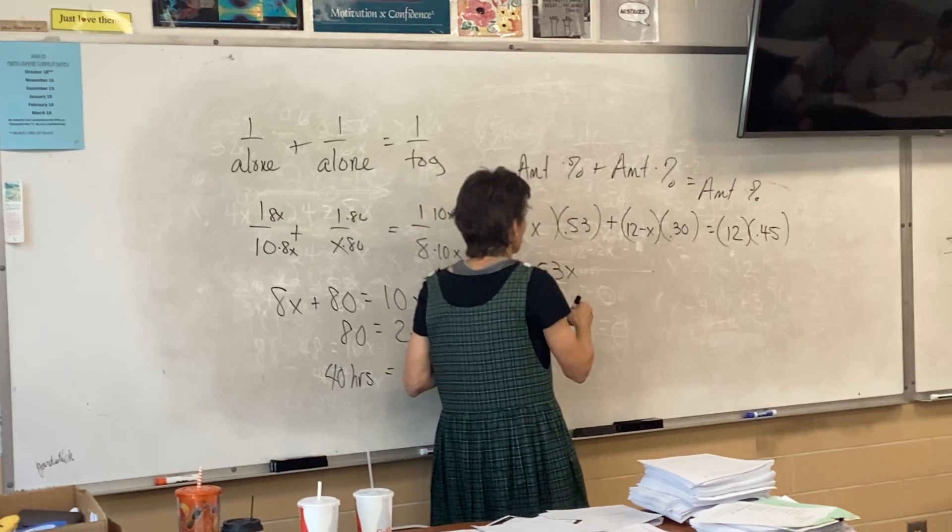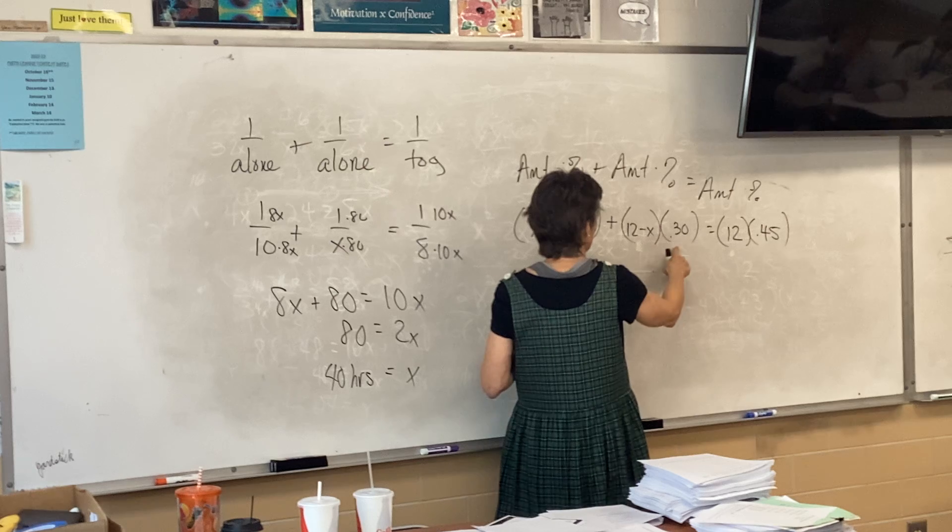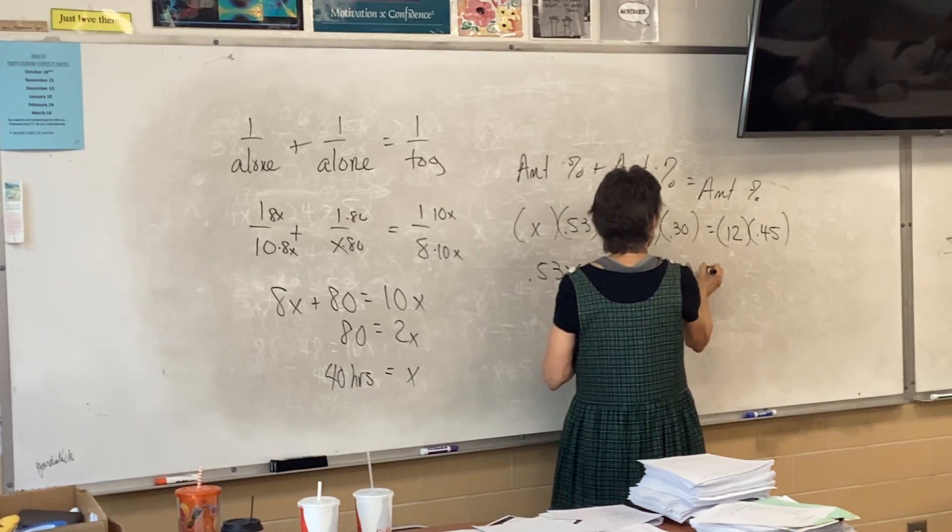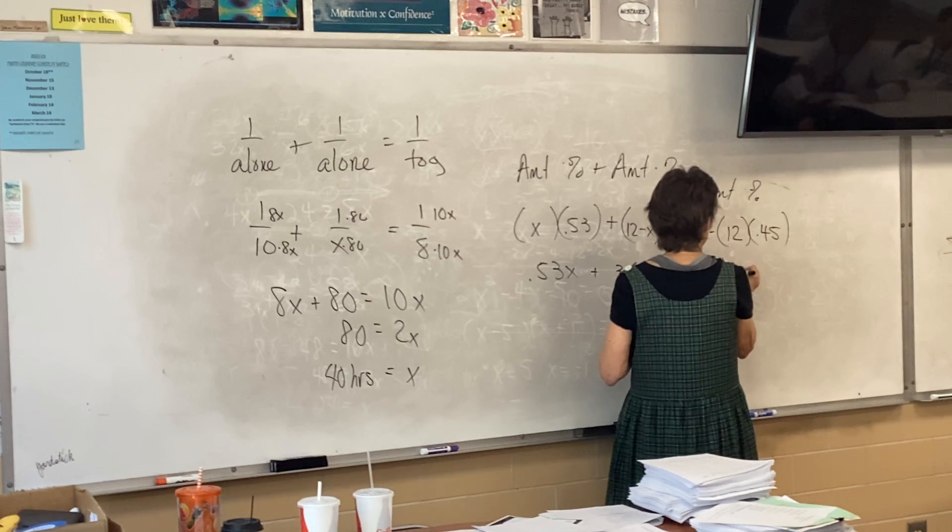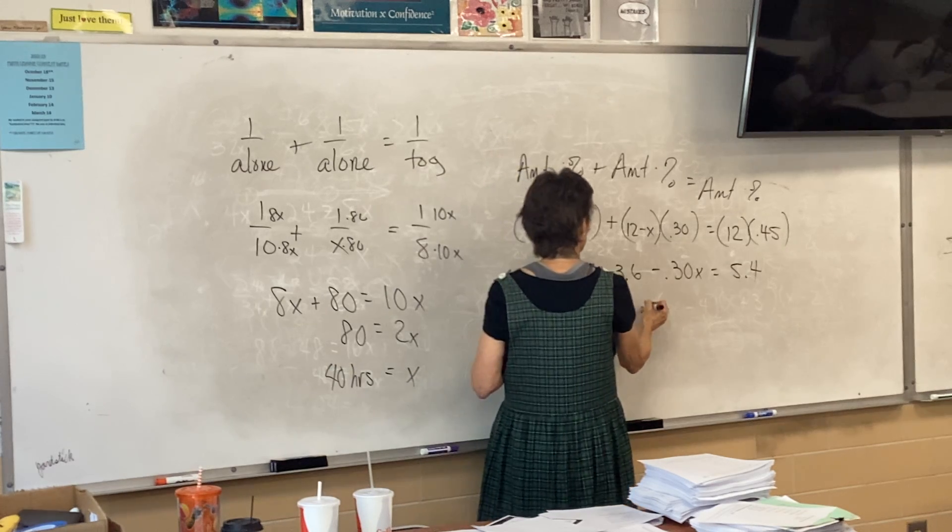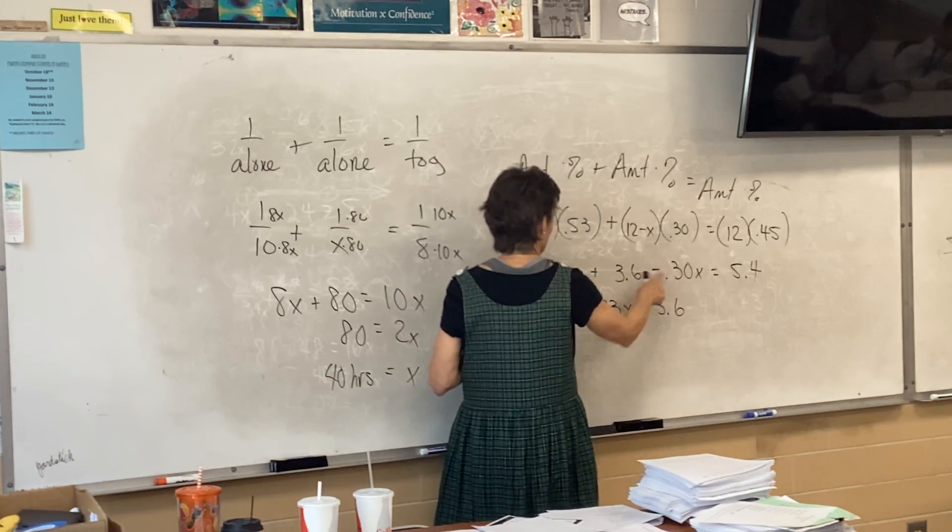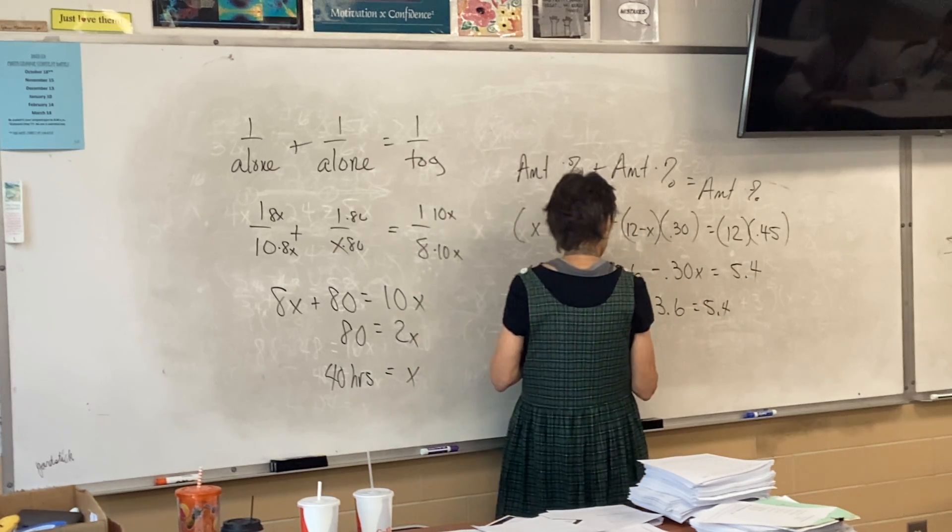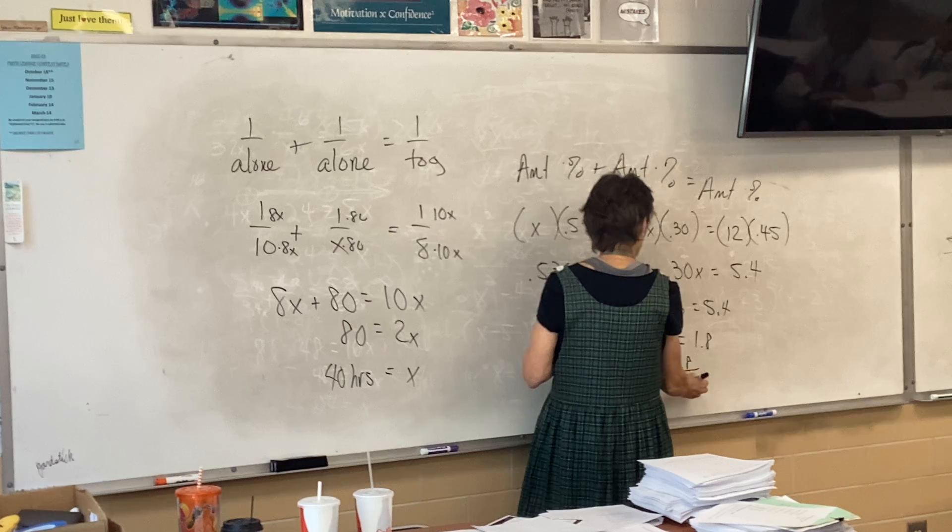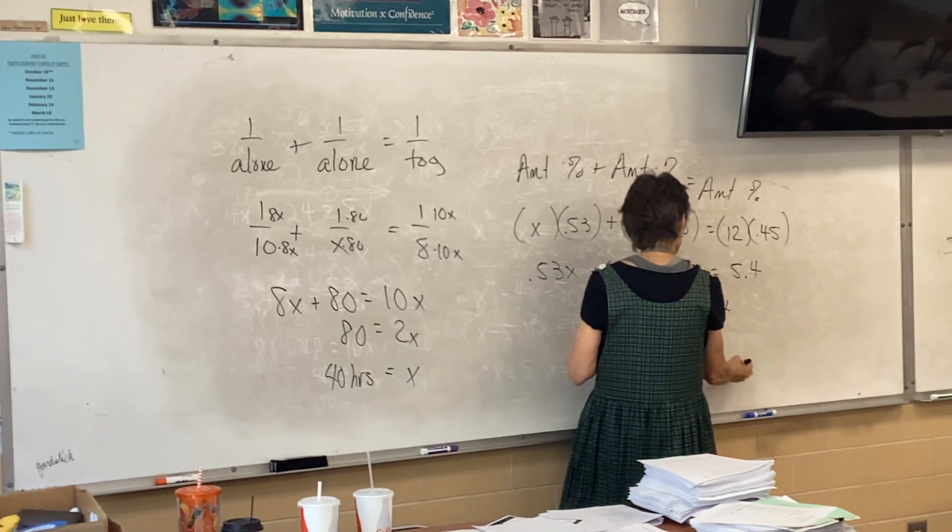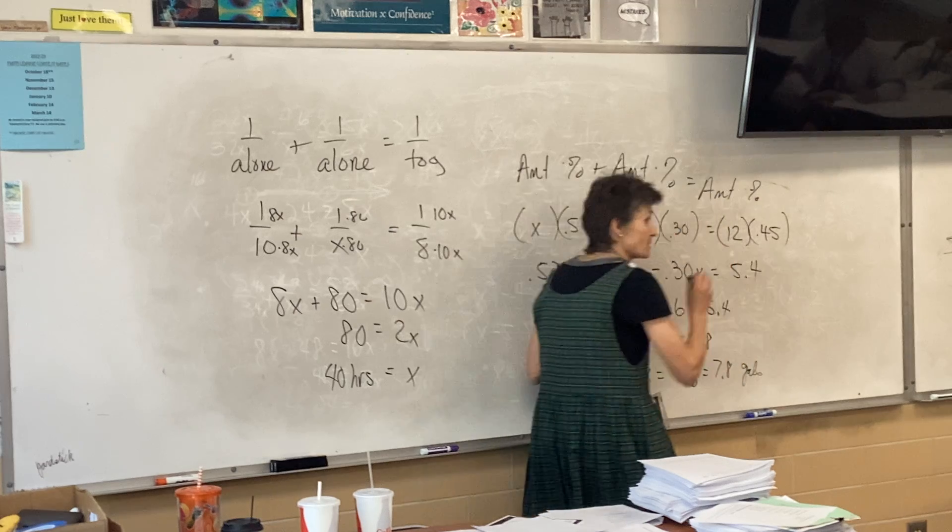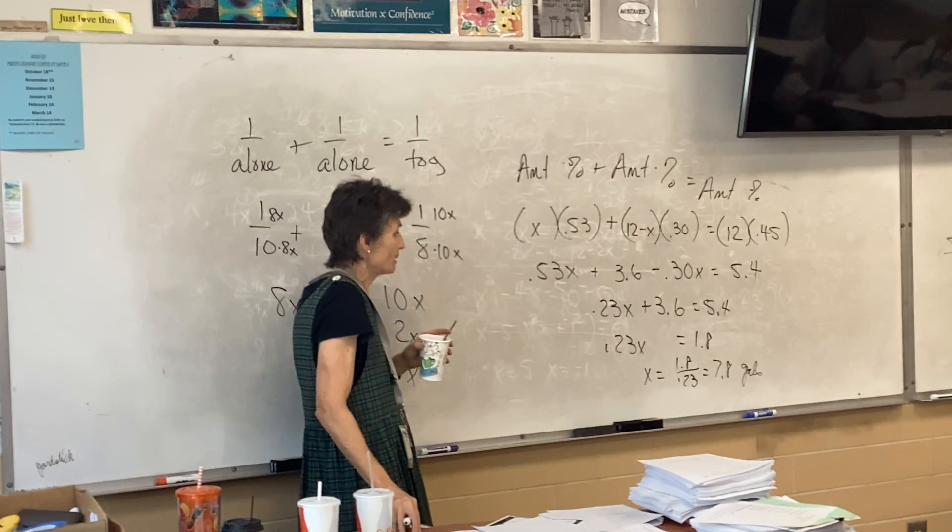So 0.53x plus 0.30 times 12 minus x equals 0.45 times 12. This is a distribute, so 3.6 minus 0.30x. Then I can combine these, so 0.23x equals 1.8. I'm going to need a calculator for this one. So 1.8 over 0.23 equals 7.8 gallons.